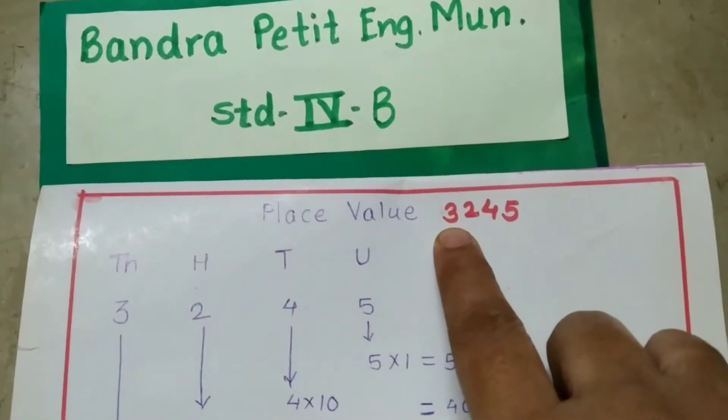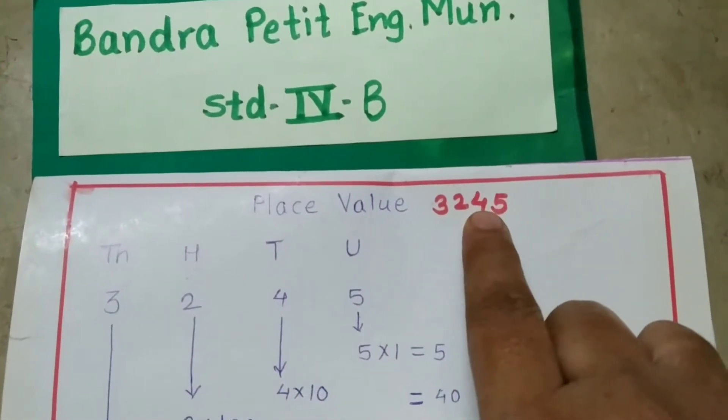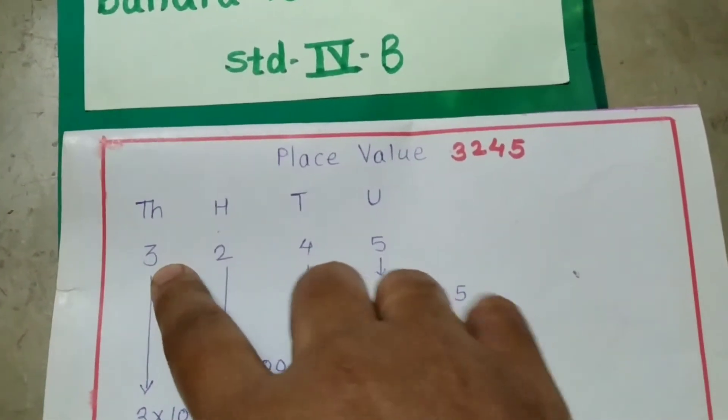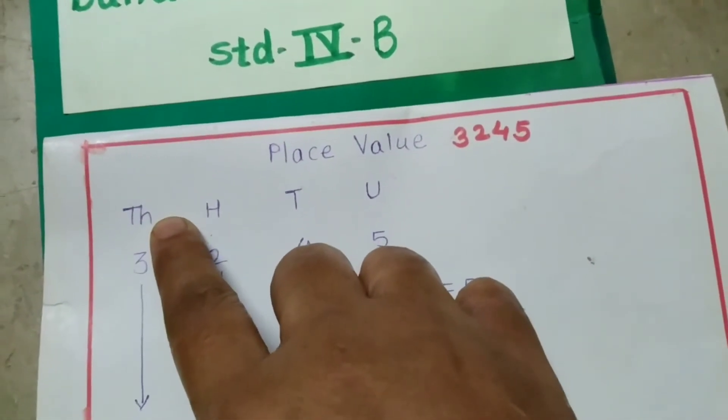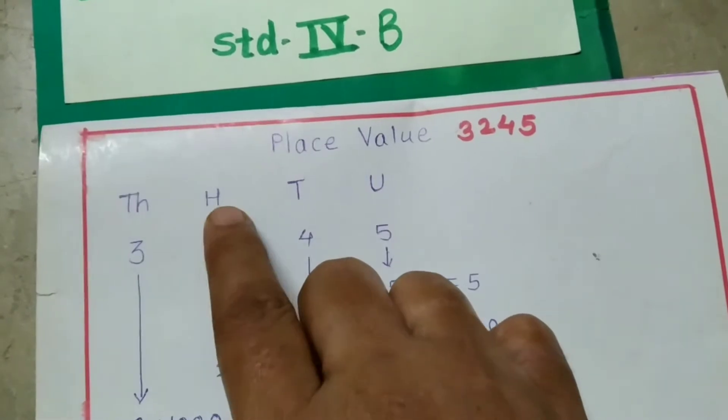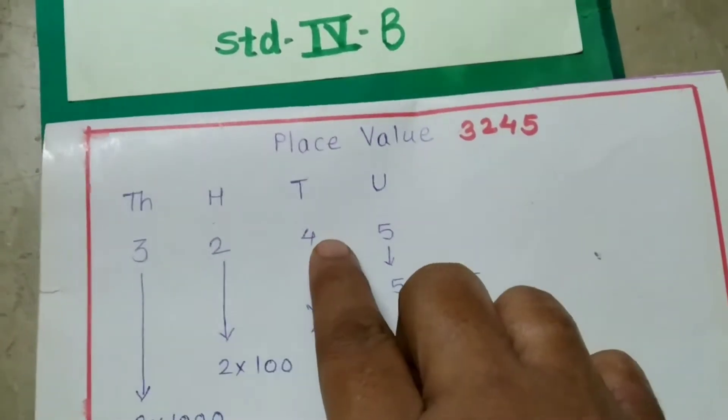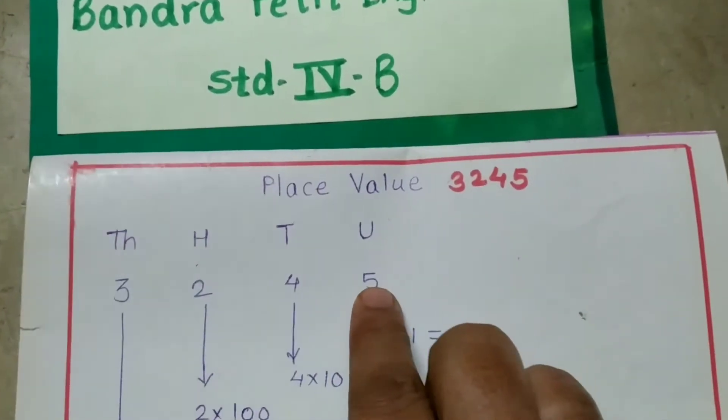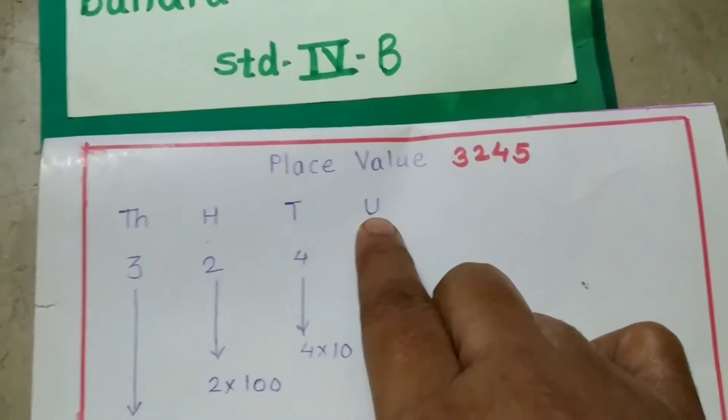Number is 3245. So number 3 is in 1000 place, number 2 is in 100 place, and number 4 is in 10 place, and number 5 is in unit place.